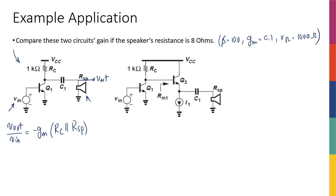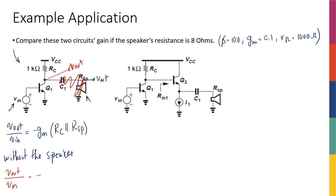Without the speaker connected, V_out over V_in would be negative g_m times R_C. Knowing g_m is 0.1 and R_C is 1 kΩ, I get a gain of negative 100. So I amplify my signal by a factor of 100 — and because of the negative sign, it's flipped, but that doesn't matter. I would have amplified by a factor of 100.